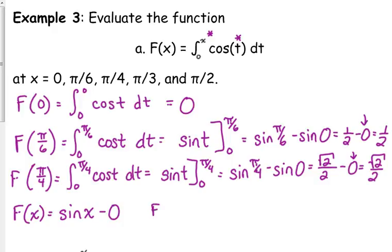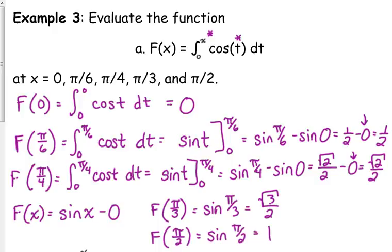So if we want to know F of π over 3, instead of writing out all that stuff, I know that it's just the sine of π over 3, which is the square root of 3 over 2. And F of π over 2 is simply the sine of π over 2, which is 1.